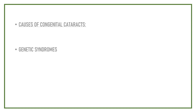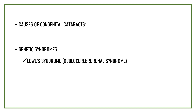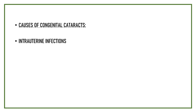Congenital cataracts can also occur as part of a genetic syndrome like Lowe's syndrome, which is also known as oculocerebrorenal syndrome, Down syndrome, Alport syndrome, etc. Some babies develop cataract due to an intrauterine infection contracted by the mother during pregnancy — for example, rubella and toxoplasmosis.